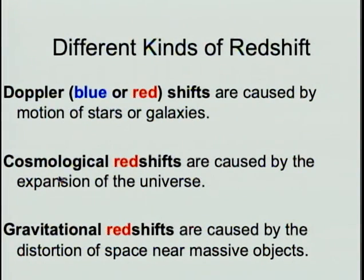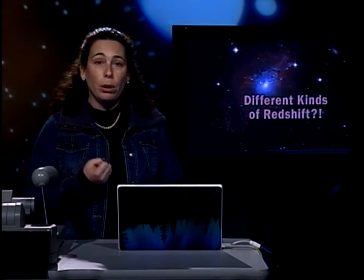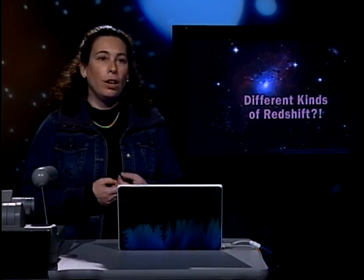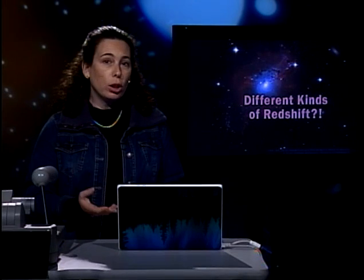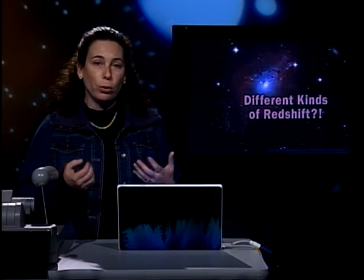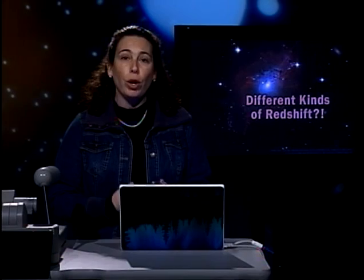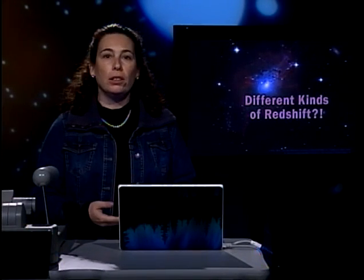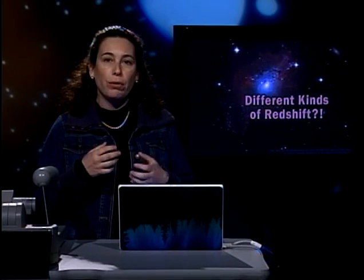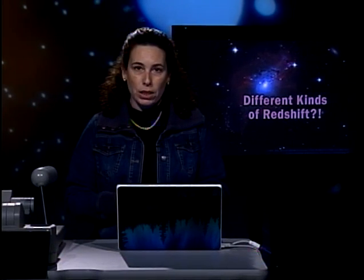There are three different kinds of red shift. The first kind you learn about in astronomy is the Doppler shift — that can be blue or red, and it's caused by the motion of stars and galaxies. For example, stars nearby may be moving towards you or away from you, and they will appear red shifted or blue shifted. Another example is the Andromeda galaxy — it's so close to us that it's moving towards us and we will eventually collide. We observe the spectrum of the Andromeda galaxy as blue shifted, and we call this kind a normal Doppler shift due to the relative velocities of these objects with respect to us.